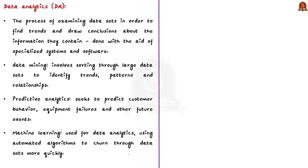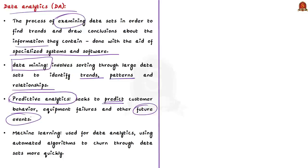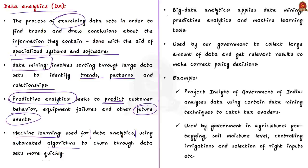Now let us have a brief understanding of data analytics. Data analytics is a process of examining data sets in order to find trends and draw conclusions about the information they contain. It is done with the help of specialized systems and software. An advanced type of data analytics includes data mining, which involves sorting through large data sets to identify trends, patterns and relationships. Another type is predictive analysis, which seeks to predict customer behavior, equipment failures and other future events. Machine learning can also be used for data analytics using automated algorithms to churn through data sets more rapidly. Big data analytics applies data mining, predictive analysis and machine learning tools.